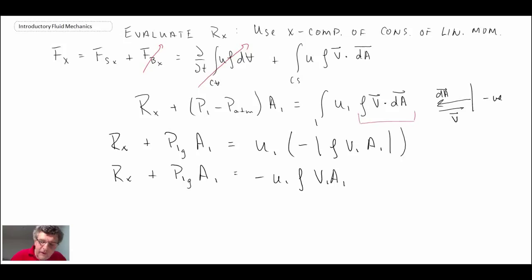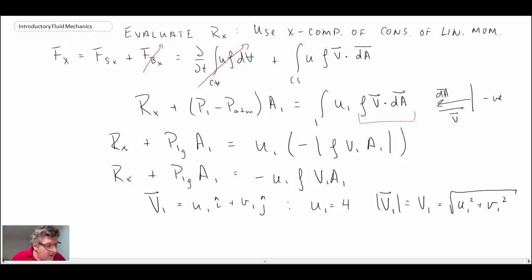Now what I've written here for v1, let me expand out v1 as a vector. And we solved in the first part, u1 was 4. So we can evaluate the magnitude of v1, and that is v1 that I have in the above equation. And that is just the two components and then the square root.